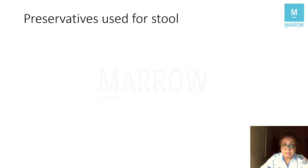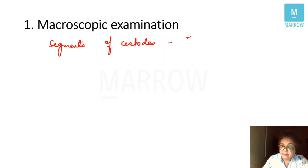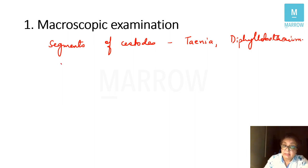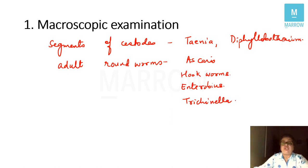Moving on to macroscopic examination of stool specimens. For macroscopic examination, we can see segments of cestodes such as Taenia or Diphyllobothrium latum. We can also macroscopically examine stool for adult roundworms — roundworms of Ascaris, hookworms, Echinococcus, and Trichinella. So for macroscopic examination we look for segments or adult roundworms.